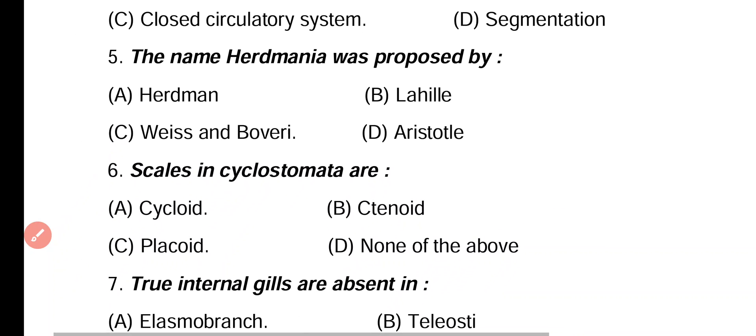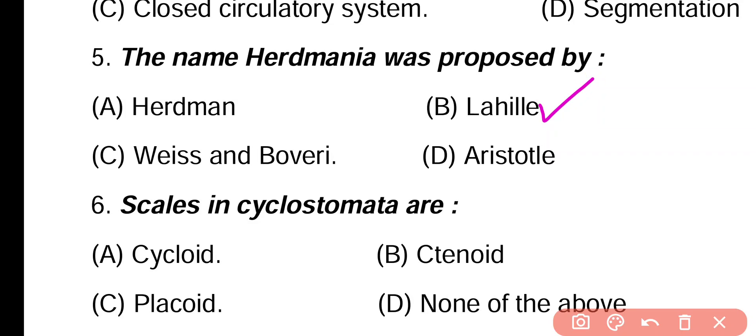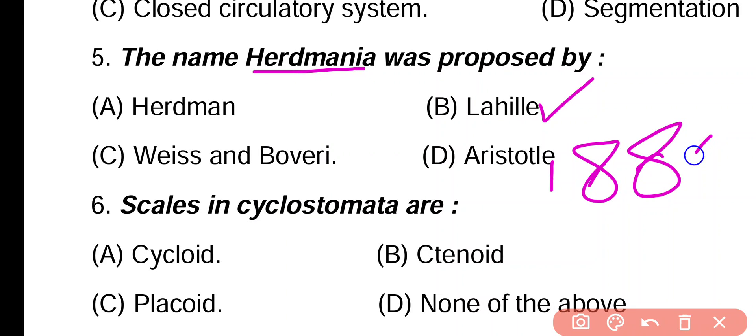Question 5. The name Hardmania was proposed by: Hardman, Lahail, Vis and Bovary, Aristotle. Correct answer is option B. The name Hardmania was proposed by Lahail in 1888.